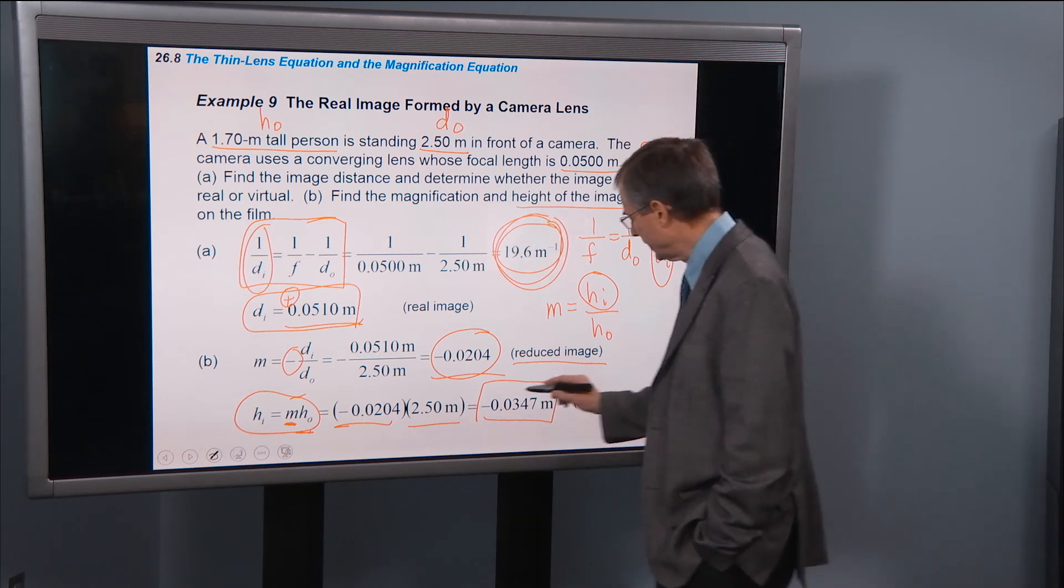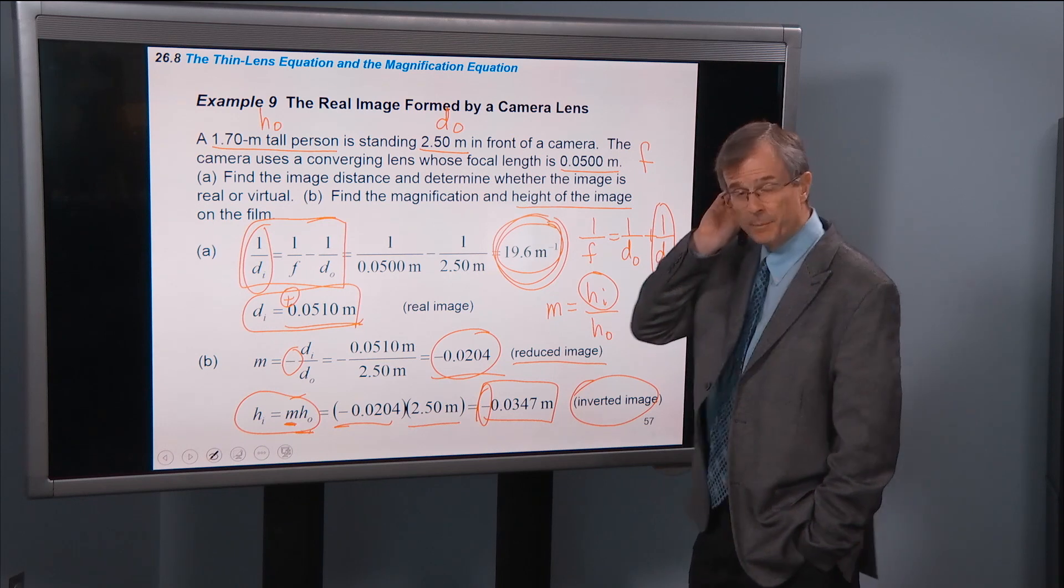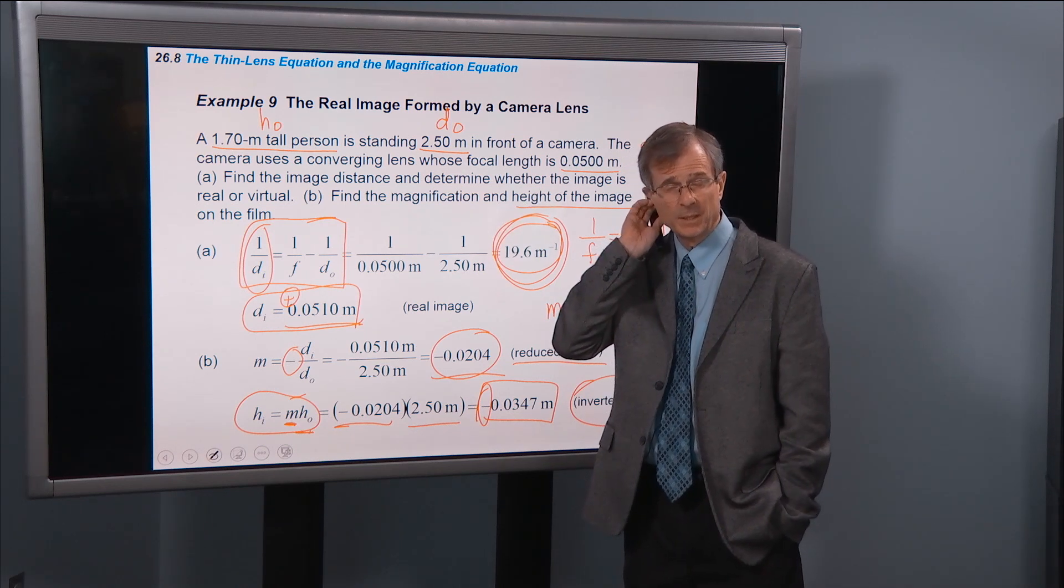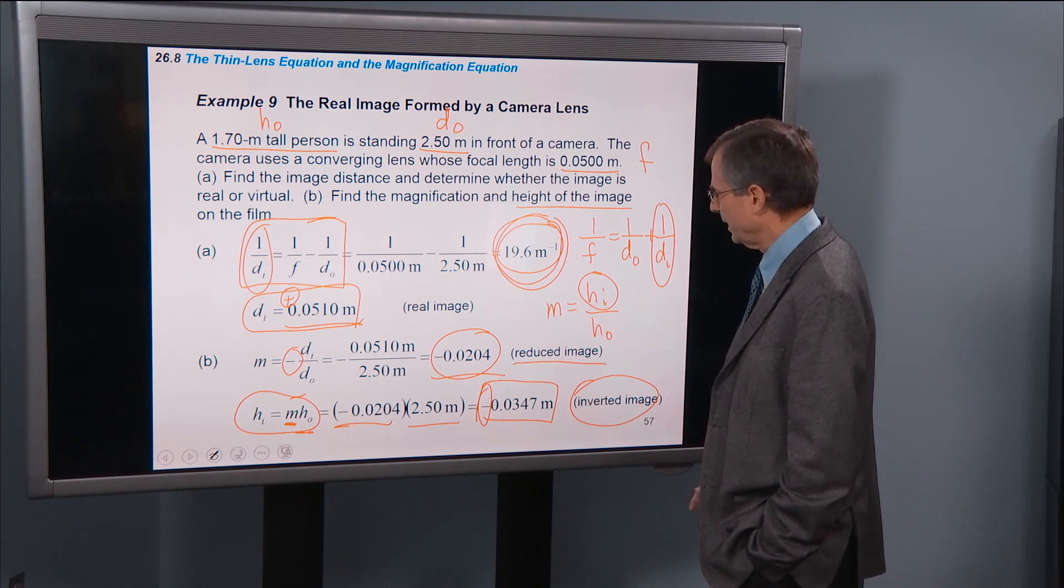And I say you're absolutely right. This says that the image is inverted. Had that been a positive number, it would have been an upright image.